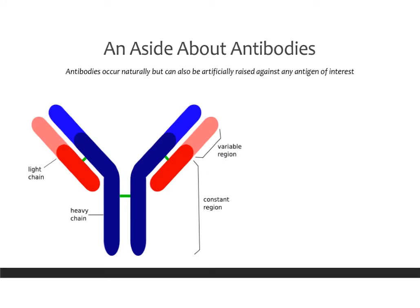Now that we understand chromatin, let's move on to talking about antibodies. This section is background on the things you need to understand to understand CHIP, so it will feel a little like jumping around, but we just need to cover a few major concepts in order for you to understand how CHIP works.